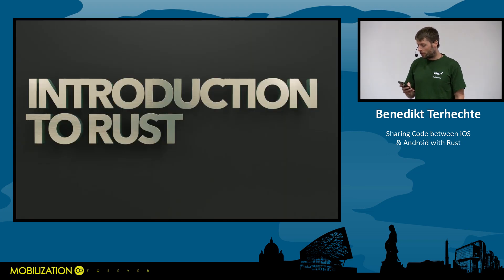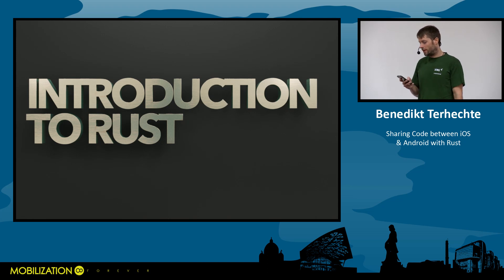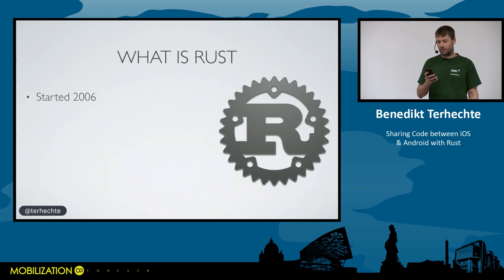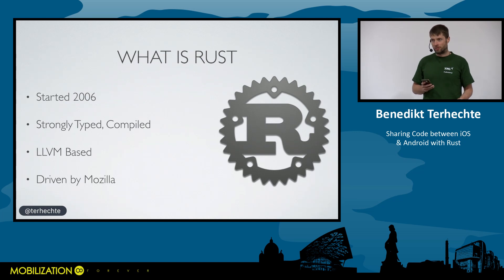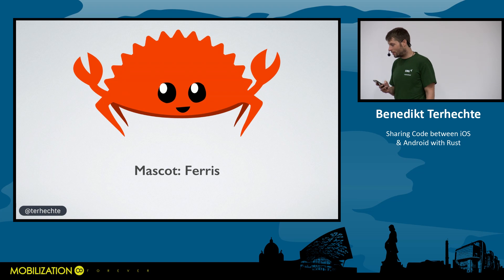This brings us to a small introduction into Rust. I'll give you a brief overview of the language to see what it looks like and how it compares to Swift and Kotlin. It was started in 2006, it's a strongly typed, LLVM-based language — just like Swift and Kotlin — driven by Mozilla, who is investing heavily into it. They have a mascot called Ferris, a crab, because they call themselves Rustaceans.